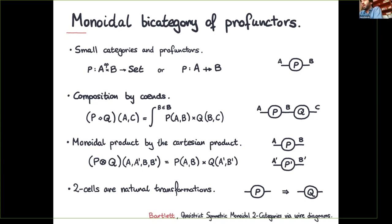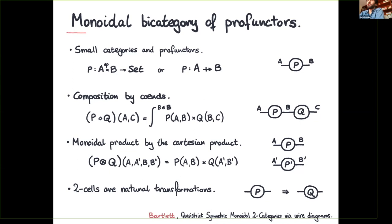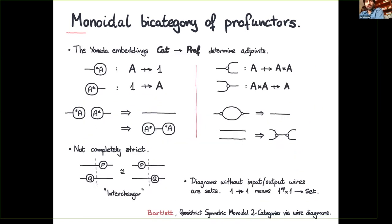When we have the monoidal product of functors, we can put the Cartesian product within them. Because this is a bicategory, we also need to take care of the two-cells, which will be natural transformations — deformations of the diagram. You could also see this as a surface diagram where natural transformations go on the surface. This presentation requires keeping track of each interchange of morphisms, unlike strict monoidal categories.